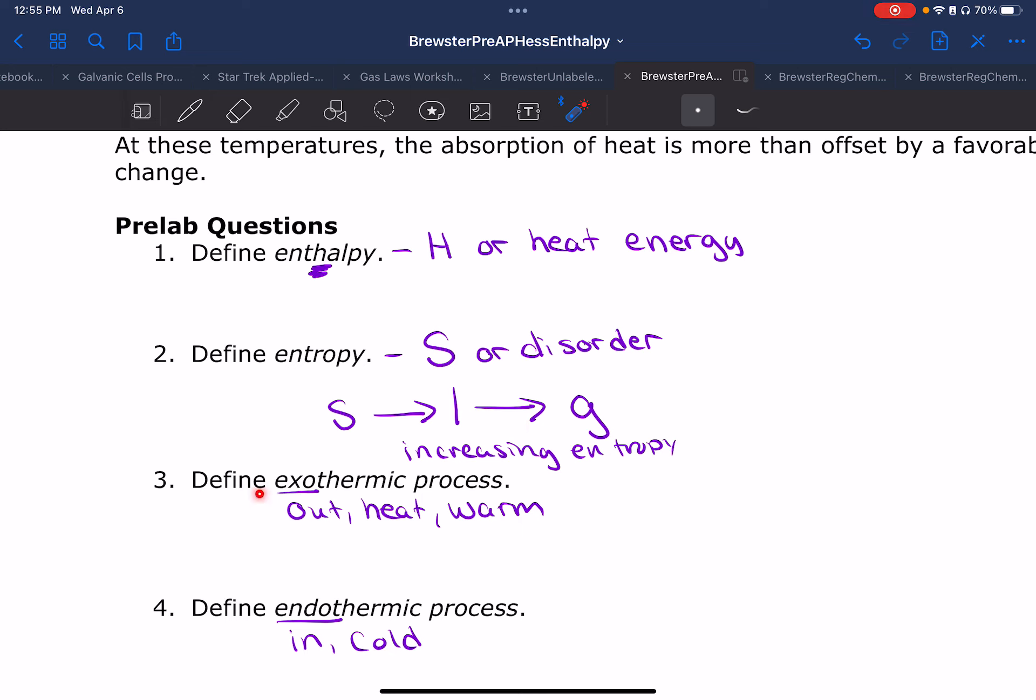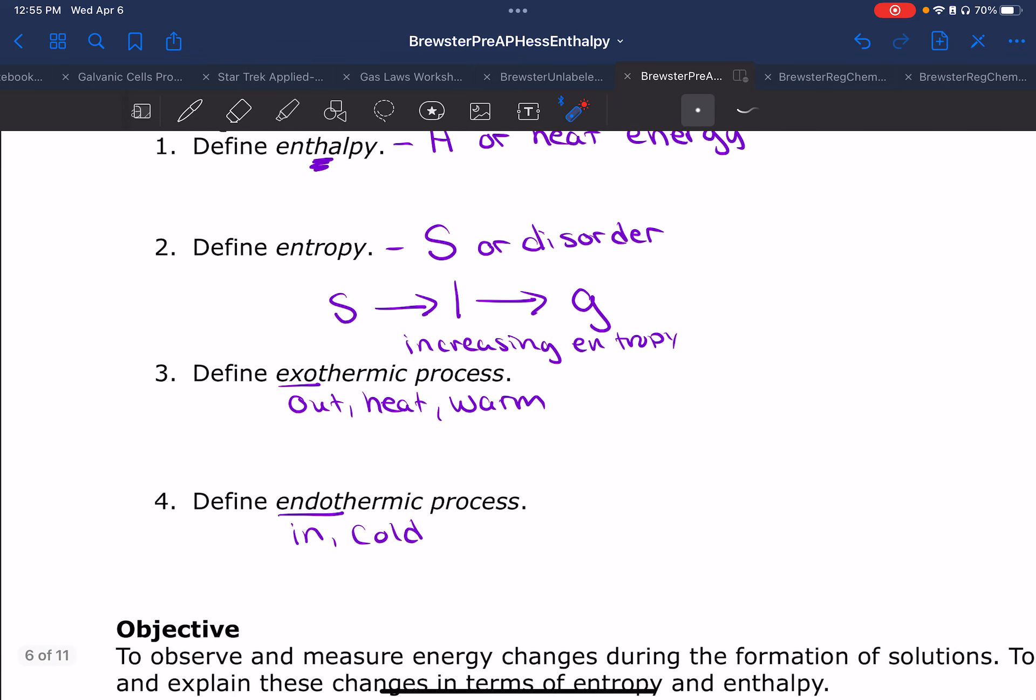Exothermic processes, hopefully you know that exo means out. These are the ones that are going to feel warm to touch because the heat is going out of the system. Endo means in, so my heat is going into the system or it feels cold. Another way of thinking about it.